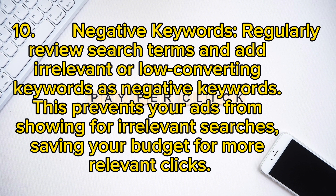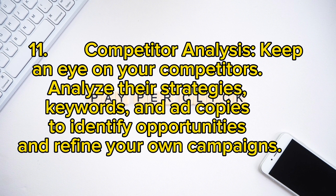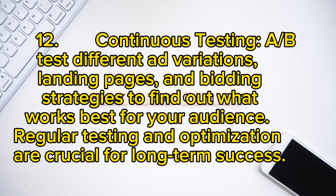10. Negative keywords: regularly review search terms and add irrelevant or low-converting keywords as negative keywords. This prevents your ads from showing for irrelevant searches, saving your budget for more relevant clicks. 11. Competitor analysis: keep an eye on your competitors, analyze their strategies, keywords, and ad copies to identify opportunities and refine your own campaigns. 12. Continuous testing: A/B test different ad variations, landing pages, and bidding strategies to find what works best for your audience. Regular testing and optimization are crucial for long-term success.